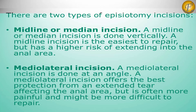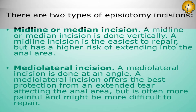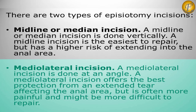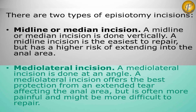There are two types of episiotomy incisions. A midline or median incision is done vertically. A midline incision is the easiest to repair but has a higher risk of extending into the anal area.